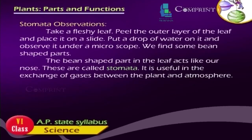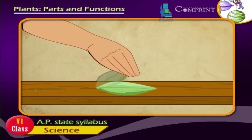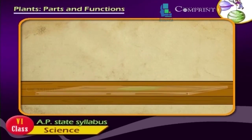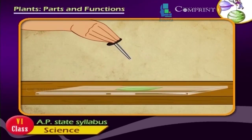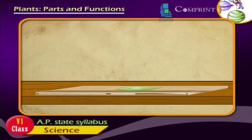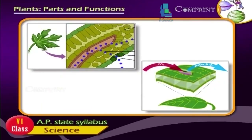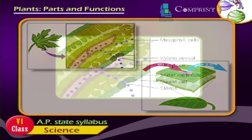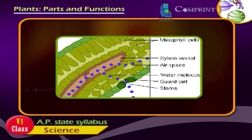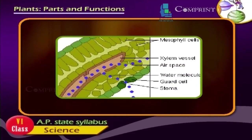Stomata observations. Take a fleshy leaf. Peel the outer layer of the leaf and place it on a slide. Put a drop of water on it and observe it under a microscope. We find some bean-shaped parts. The bean-shaped parts in the leaf act like our nose. These are called stomata, and they help in the exchange of gases between the plant and the atmosphere.